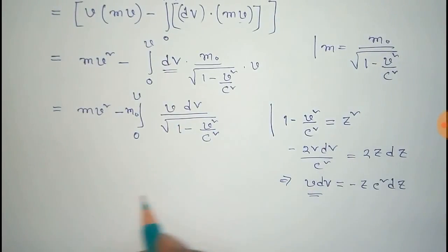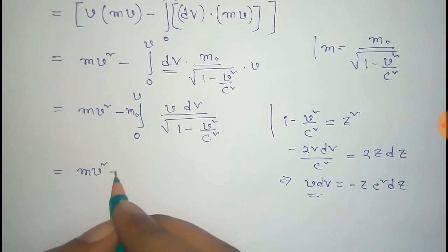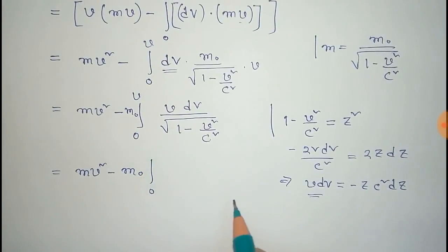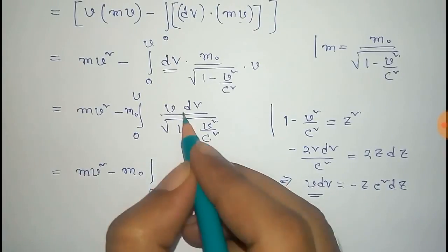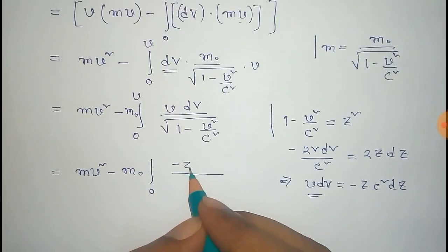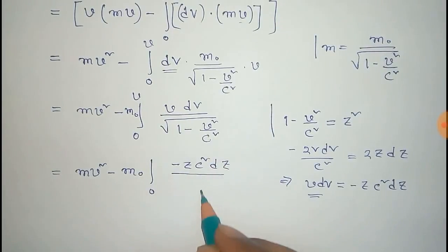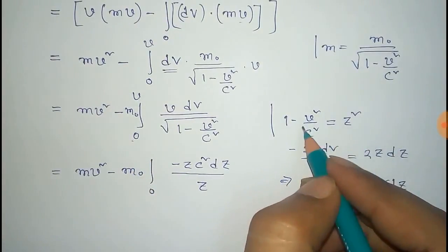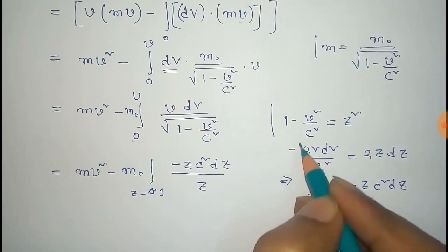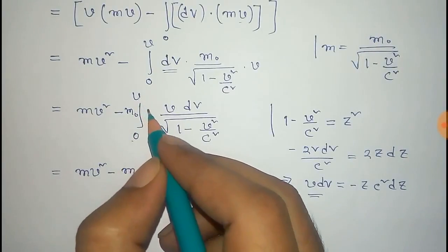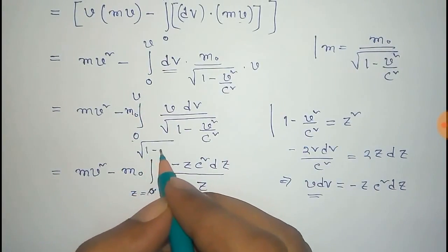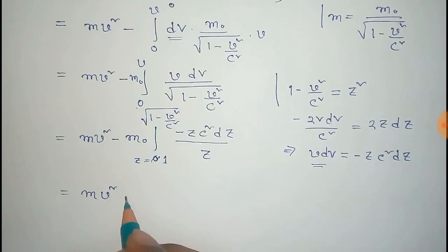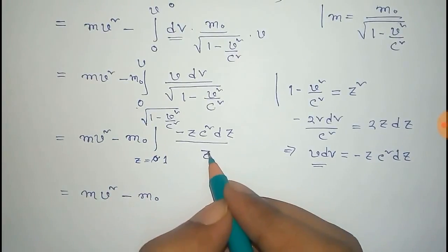Substituting, the expression becomes MV squared minus M₀ times the integral where we replace the V dV term with minus z c² dz. The limits change: for V = 0, z = 1; and for V = V, z = root(1 - v²/c²). The z in the denominator and the z from the substitution cancel.